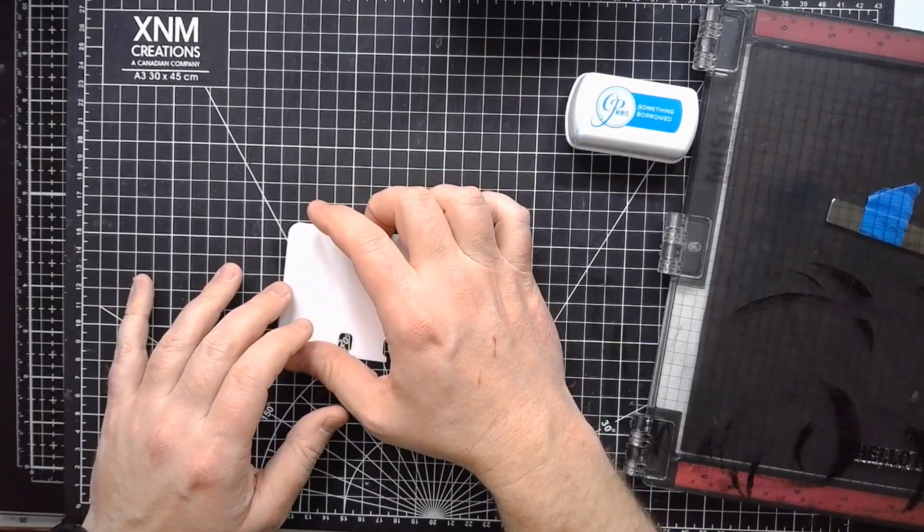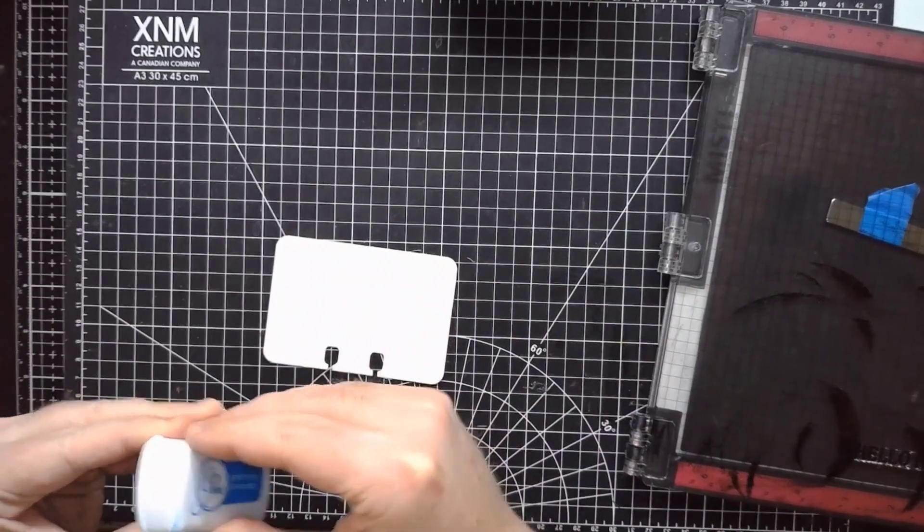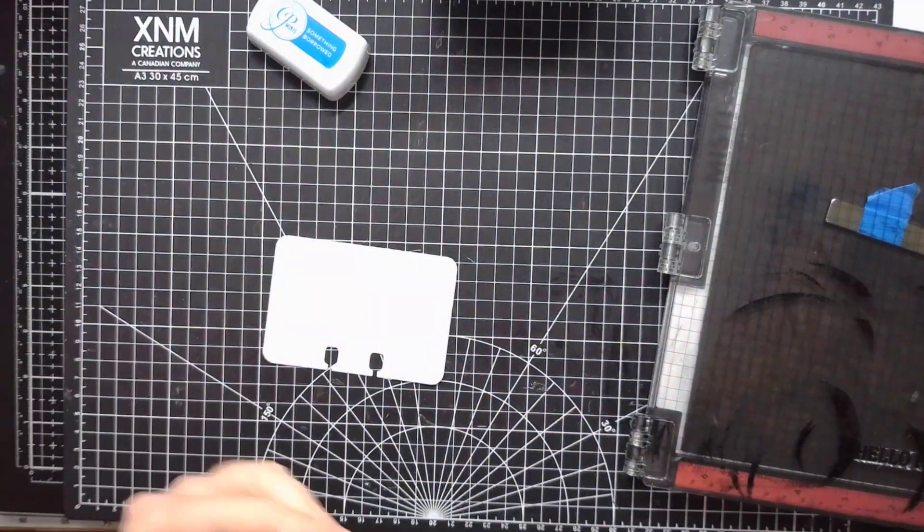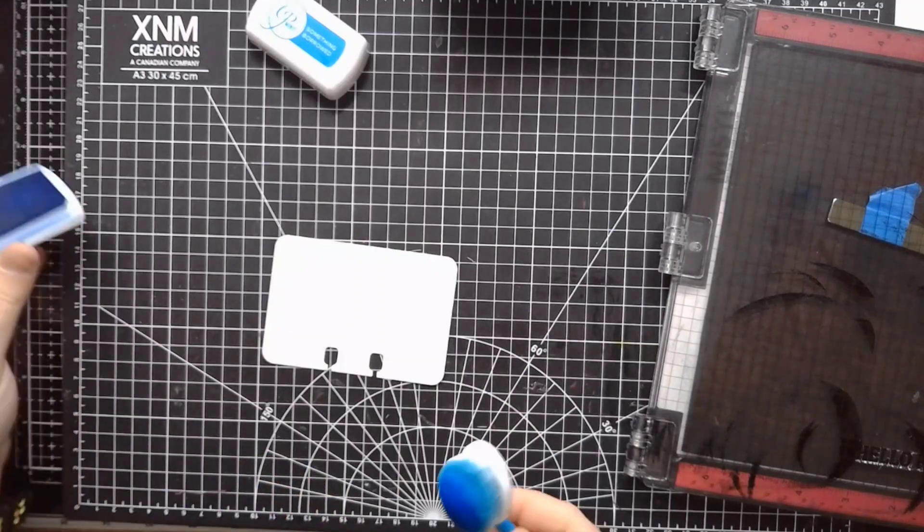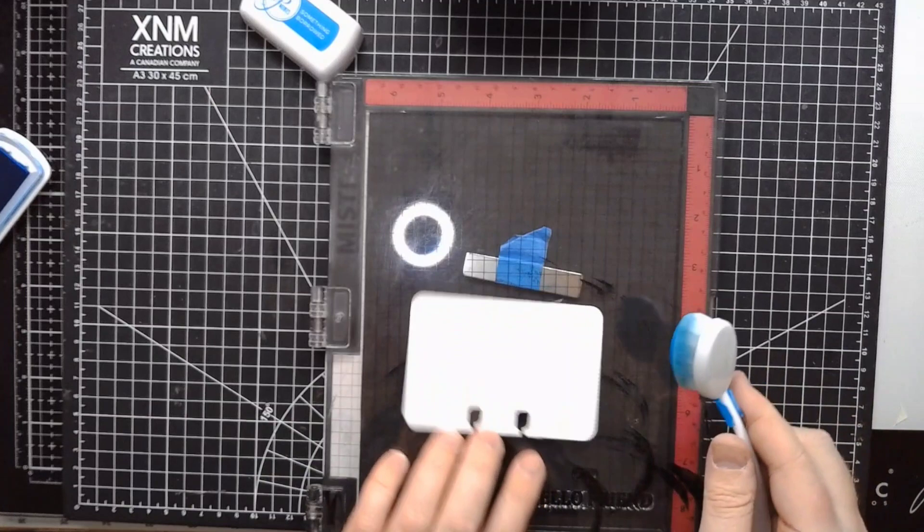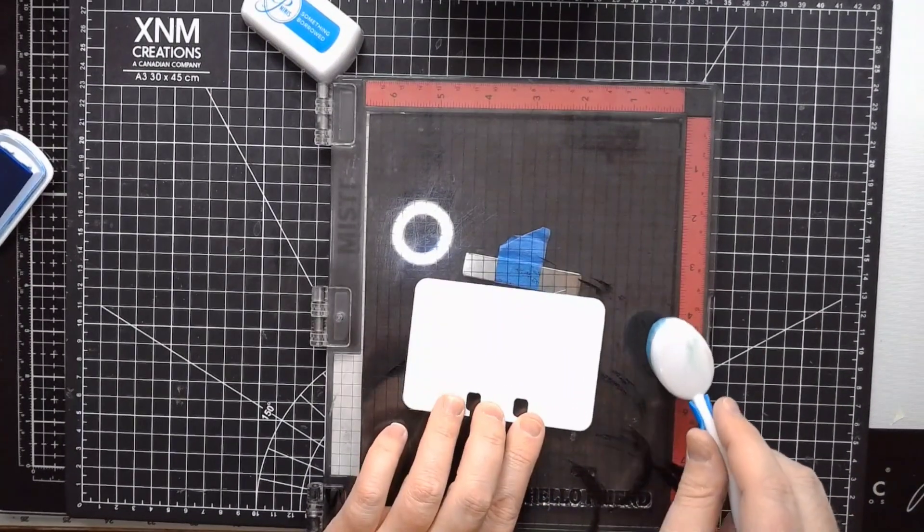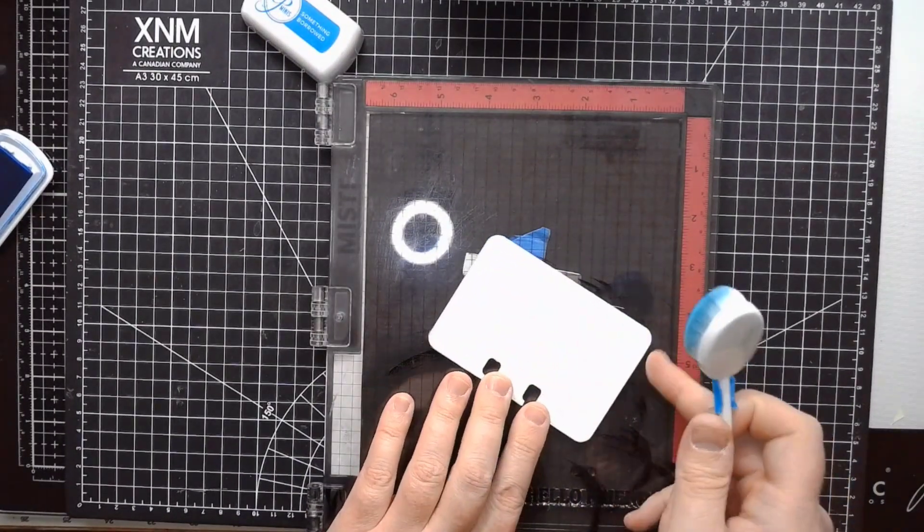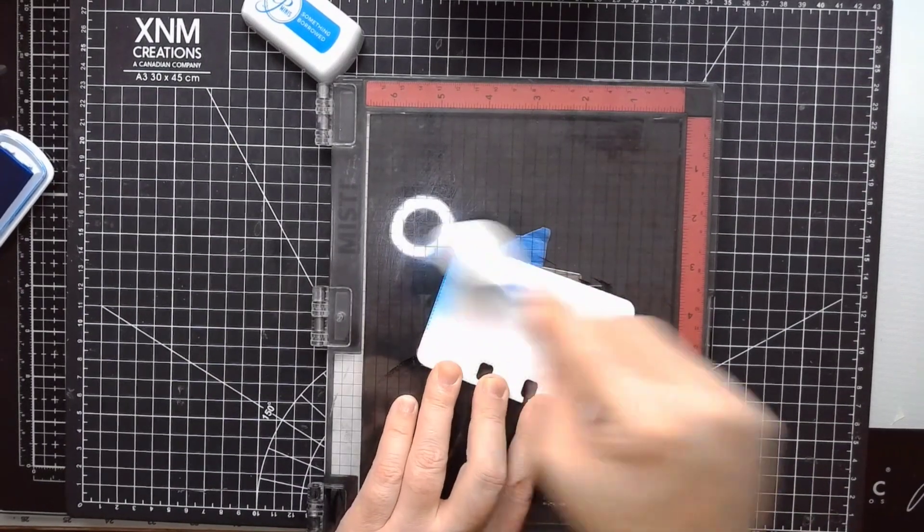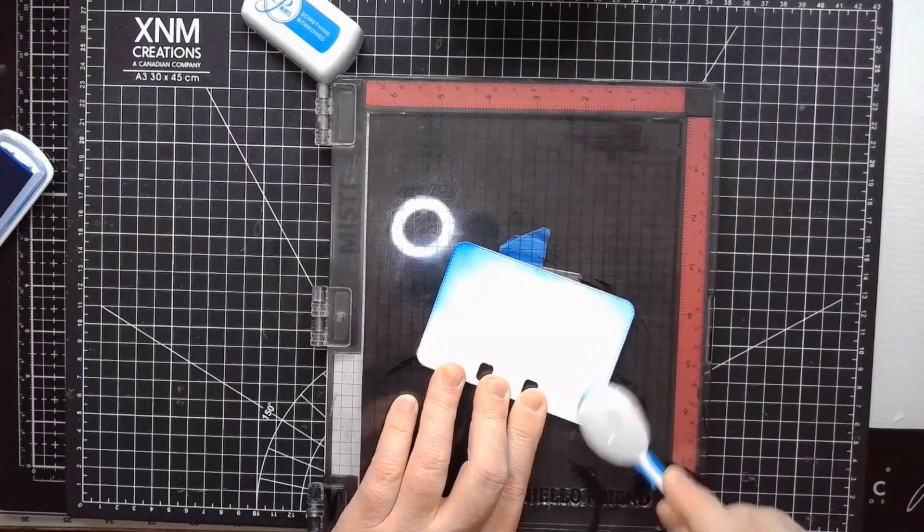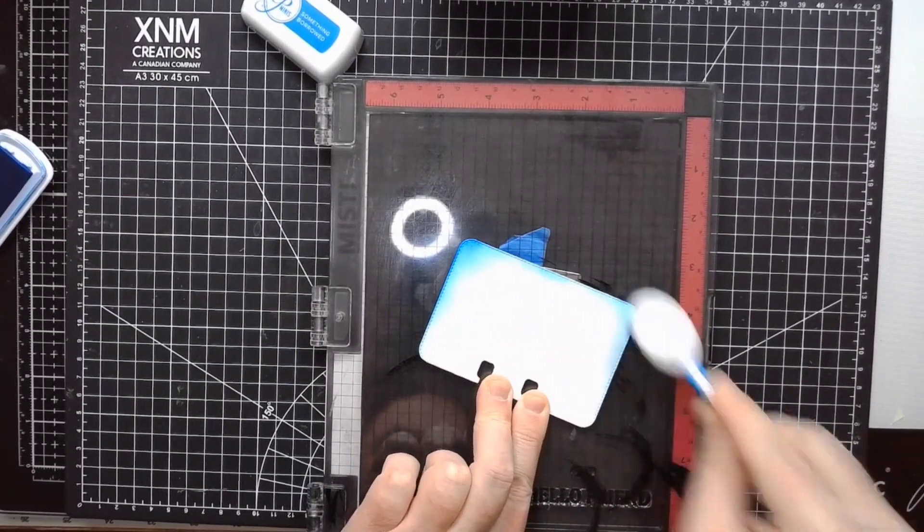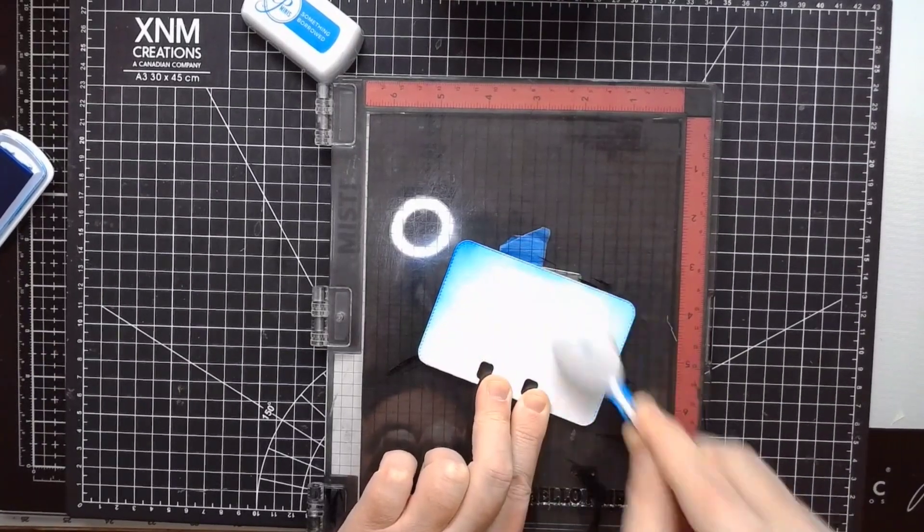I want to start out by doing just an itty bit of ink blending just to sort of create a sky on this. I'm using Neenah 110 cover weight cardstock for this. You see the die puts a nice little stitch detail, but basically I just want to mostly cover the outside just to sort of highlight that detail a little bit, but also to kind of break up the white a little bit.